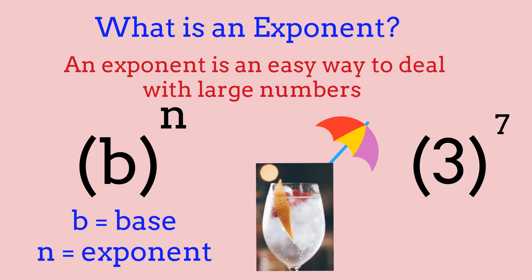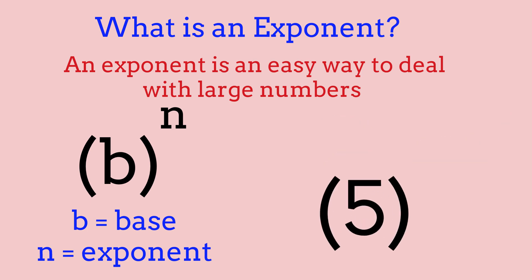So now that we know a little bit about what an exponent is, let's go over what a base is. The base is the bottom number under the exponent, and this is what gets multiplied over and over. For example, if we had 5 to the power of 8, 5 would be the base. We know that the base is the number under the exponent, and the exponent is the number over the base.